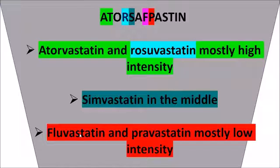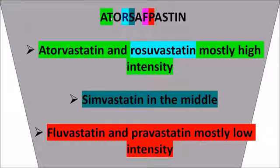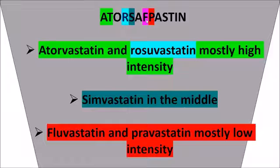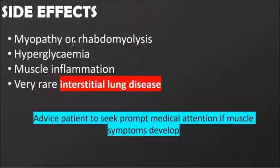You can remember the ranking using the mnemonic where the letters A, R, S, F, P go from highest to lowest intensity. So P (pravastatin) is the lowest, F (fluvastatin) is second lowest, S (simvastatin) is in the middle, and R (rosuvastatin) and A (atorvastatin) are predominantly high-intensity statins.